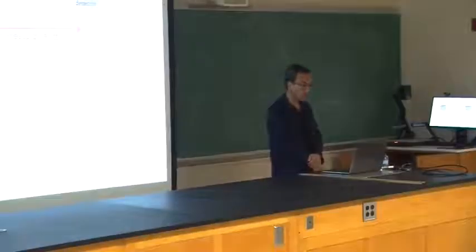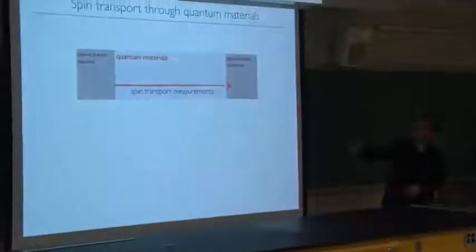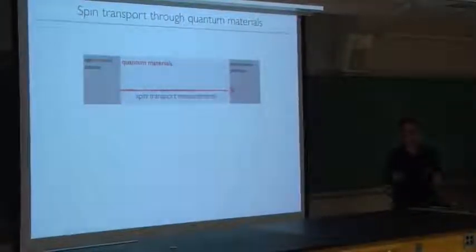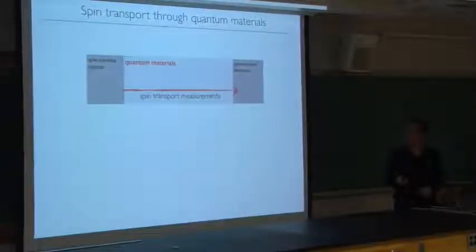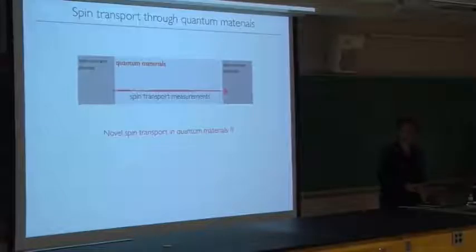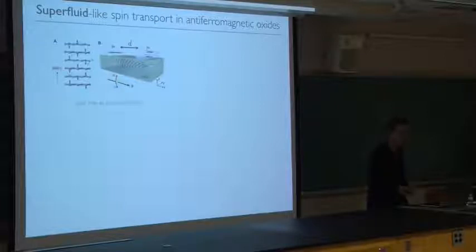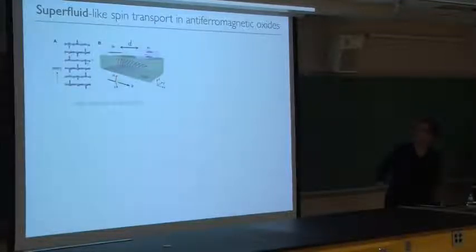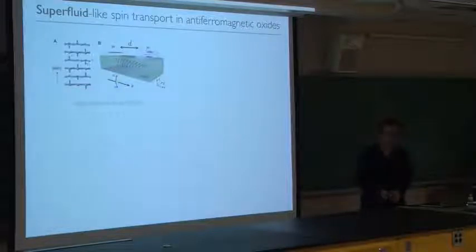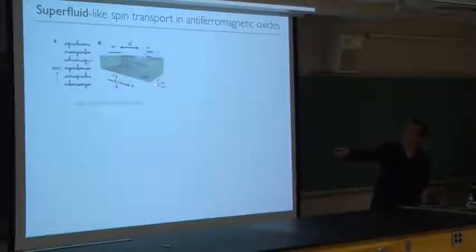From the fundamental science point of view, now we can study various quantum materials, even insulators, by sandwiching them with a spin current source and spin current detector via their transport properties. Many interesting questions arise from this new possibility. For example, what kind of novel spin transport would be possible in quantum materials? What kind of new physics will arise from strong quantum fluctuations? I'll give a couple of recent examples. First: superfluid-like spin transport in antiferromagnetic oxides. Last year, the Hanzhou group at Peking University performed spin transport measurement through an antiferromagnetic insulating oxide, chromia, by sandwiching it with two platinum electrodes.